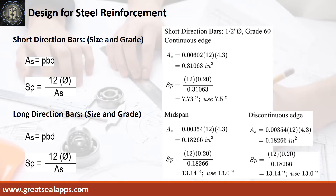At short direction, given continuous edge rho equals 0.00602, b equals 12 inches, and d equals 4.3 inches. The area of steel is 0.31063 square inches, and the spacing for half-inch diameter bar is 7.5 inches. At long direction, given mid-span and discontinuous edge rho equals 0.00354, b equals 12 inches, and d equals 4.3 inches. The area of steel for both is 0.18266 square inches, and the spacing for half-inch diameter bar is 13 inches.